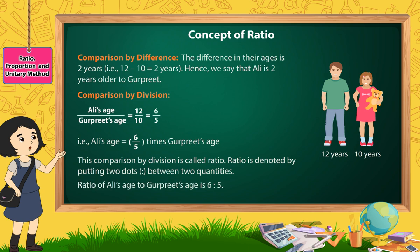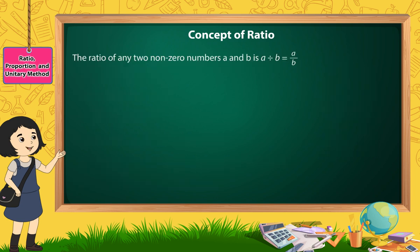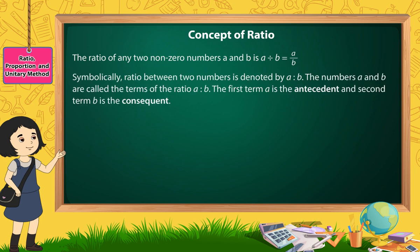Thus, we can say that the ratio of Ali's age to Gurpreet's age is 6 is to 5. The ratio of any two non-zero numbers A and B is A divided by B, which is equal to A by B. Symbolically, the ratio between two numbers is denoted by A is to B. The numbers A and B are called the terms of the ratio A is to B. The first term A is the antecedent and the second term B is the consequent.